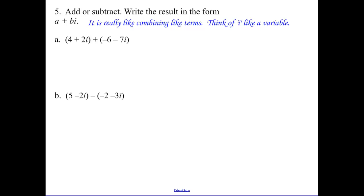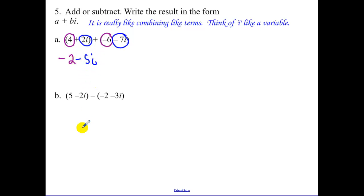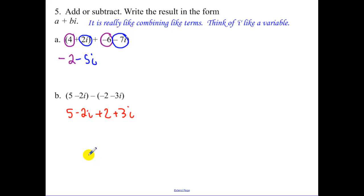Adding or subtracting complex numbers is just like combining like terms — combine the real parts and combine the imaginary parts. When adding, combine 4 and negative 6 to get negative 2, then combine 2i and negative 7i to get negative 5i. For subtraction, distribute the negative first so you don't make a mistake. Then 5 and 2 combine to be 7, and 2i plus 3i gives plus 5i. That's our answer in a + bi form.